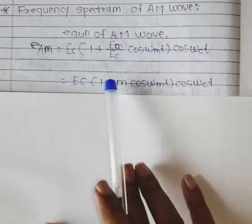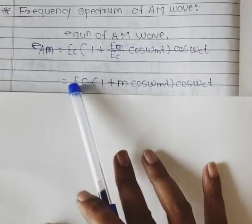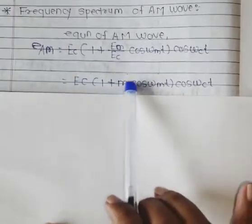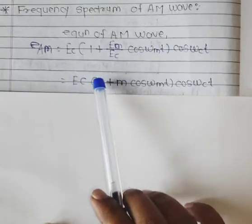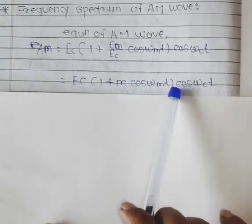E_c is the carrier power. I am going to multiply this out, so I will multiply through the equation.